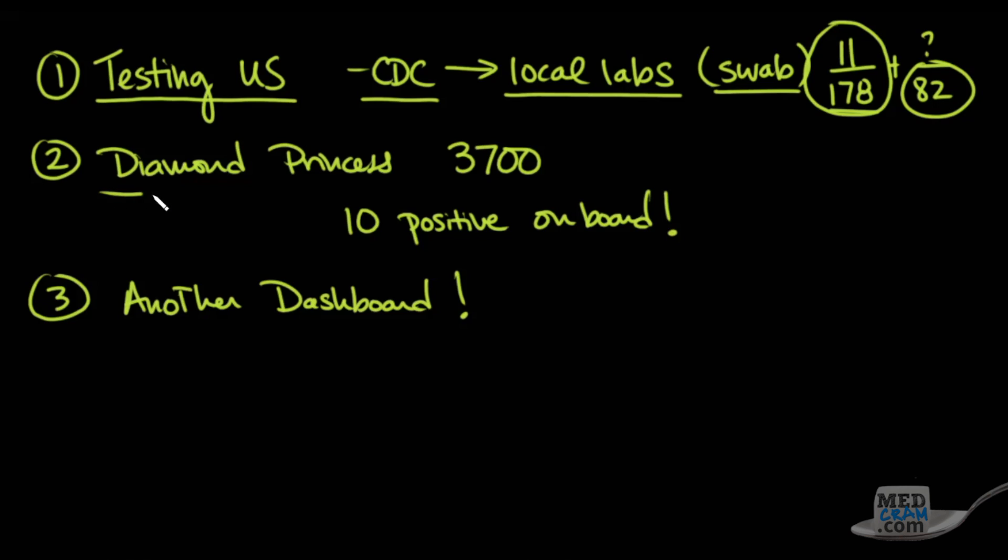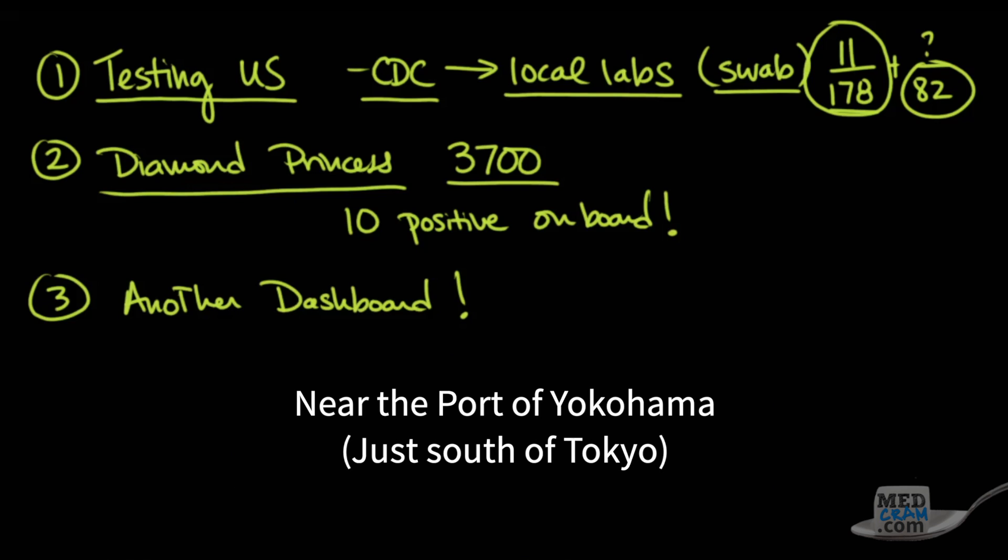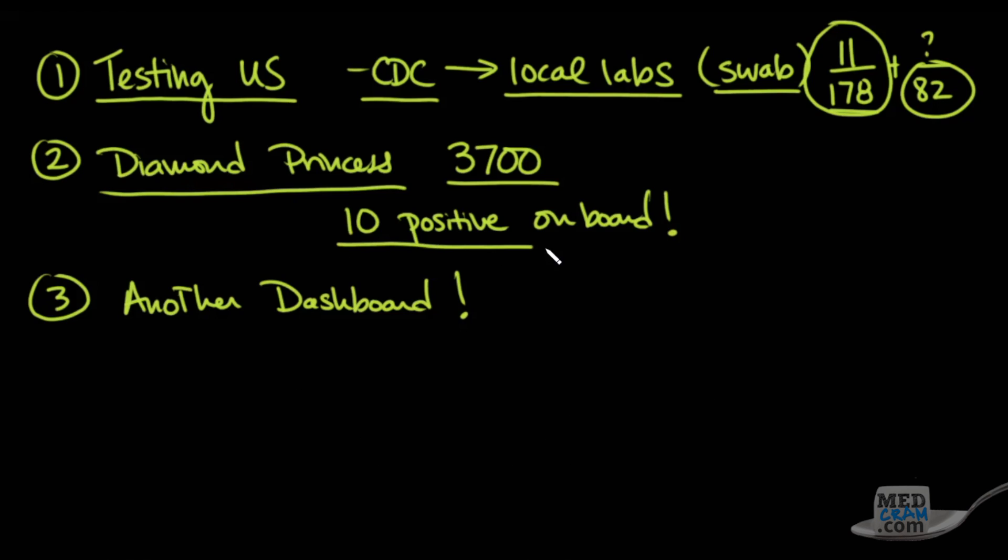Yesterday, we talked about the Diamond Princess. About 3,700 are on board, and this is floating off the coast of Japan. And it looks as though there are 10 positive on board based on the stories that are coming out.